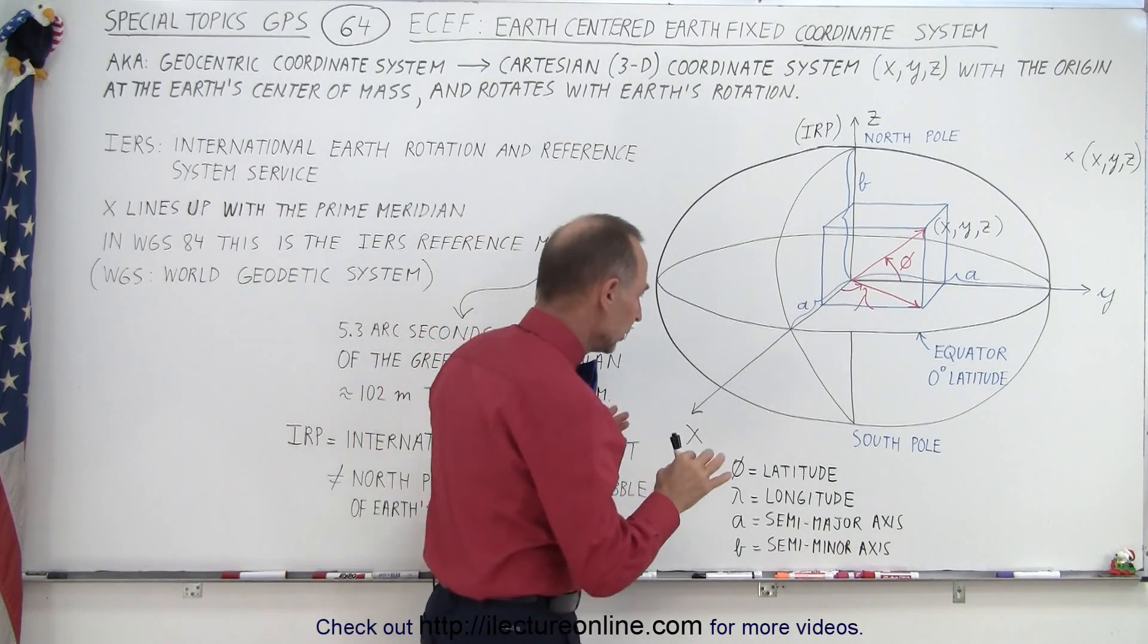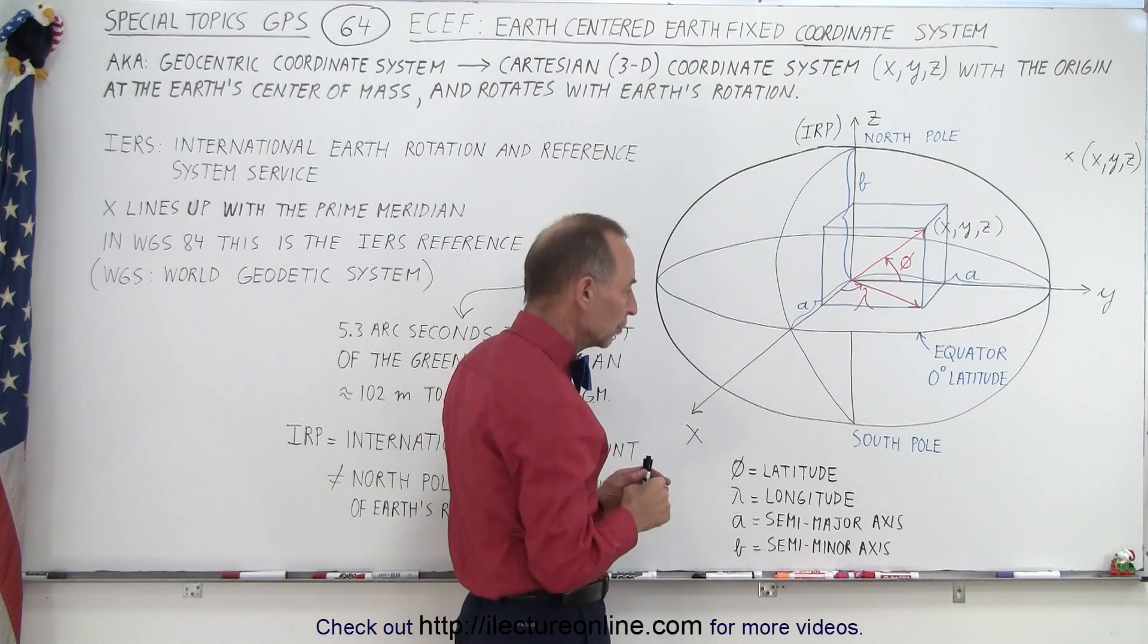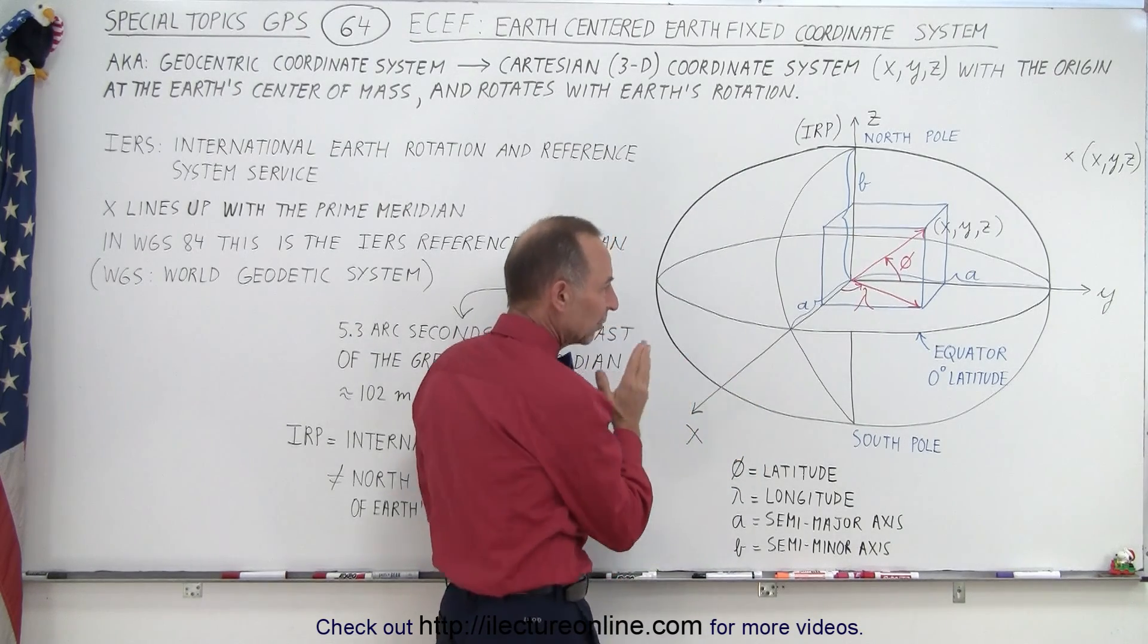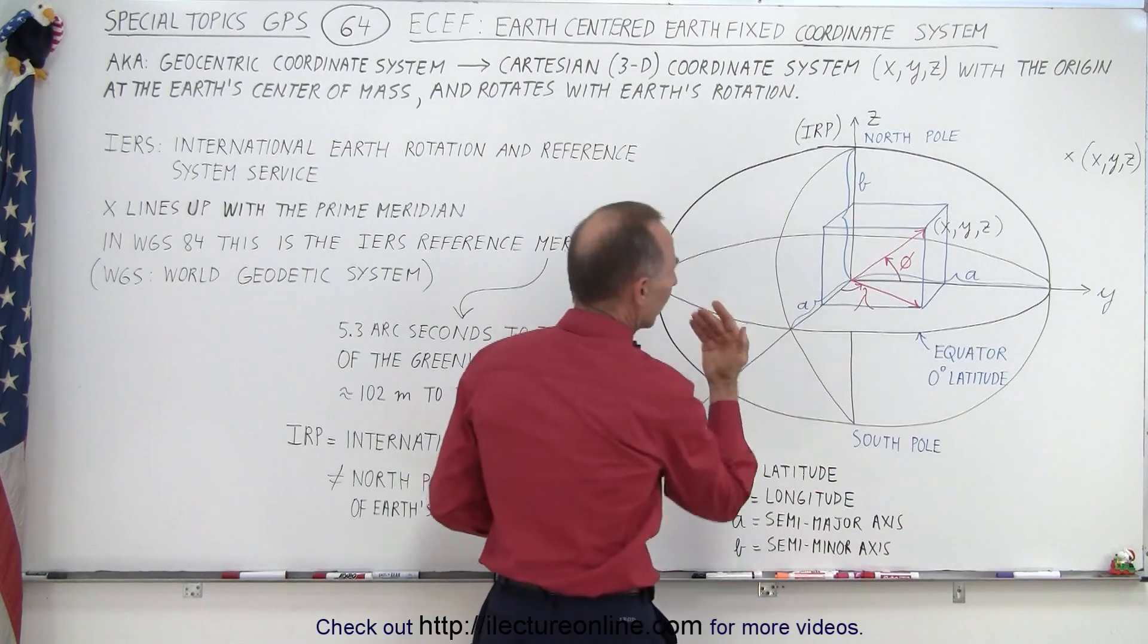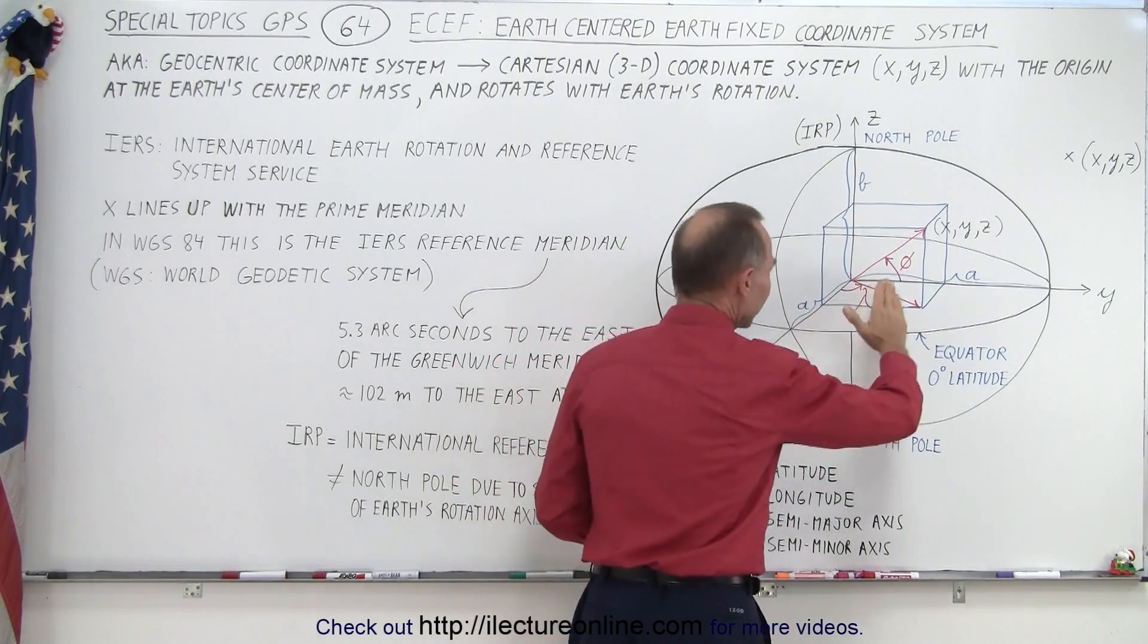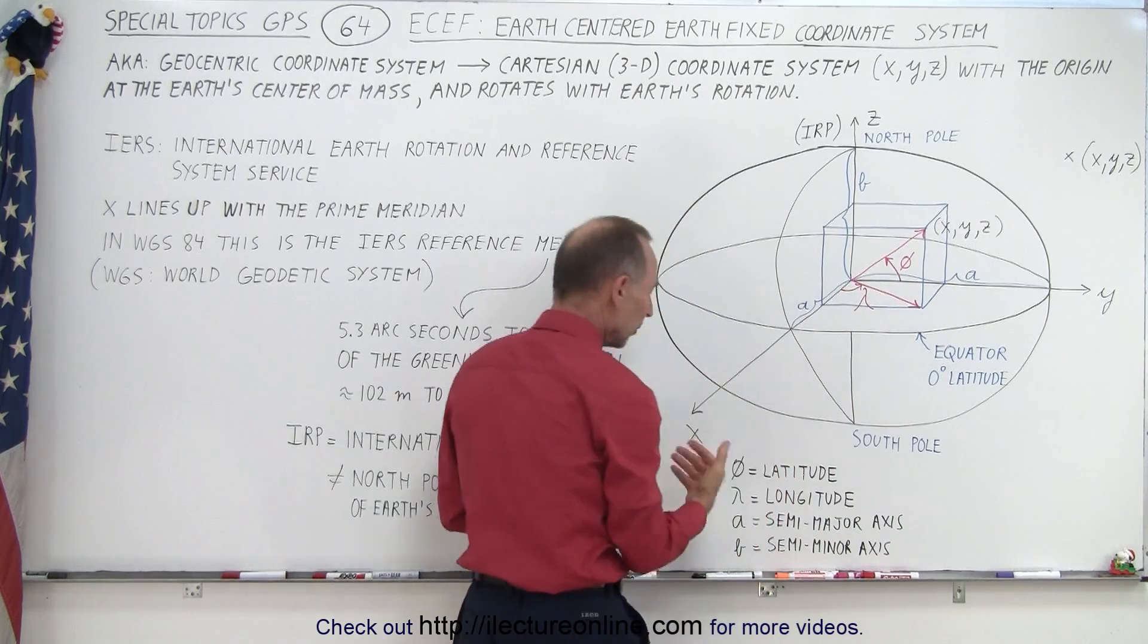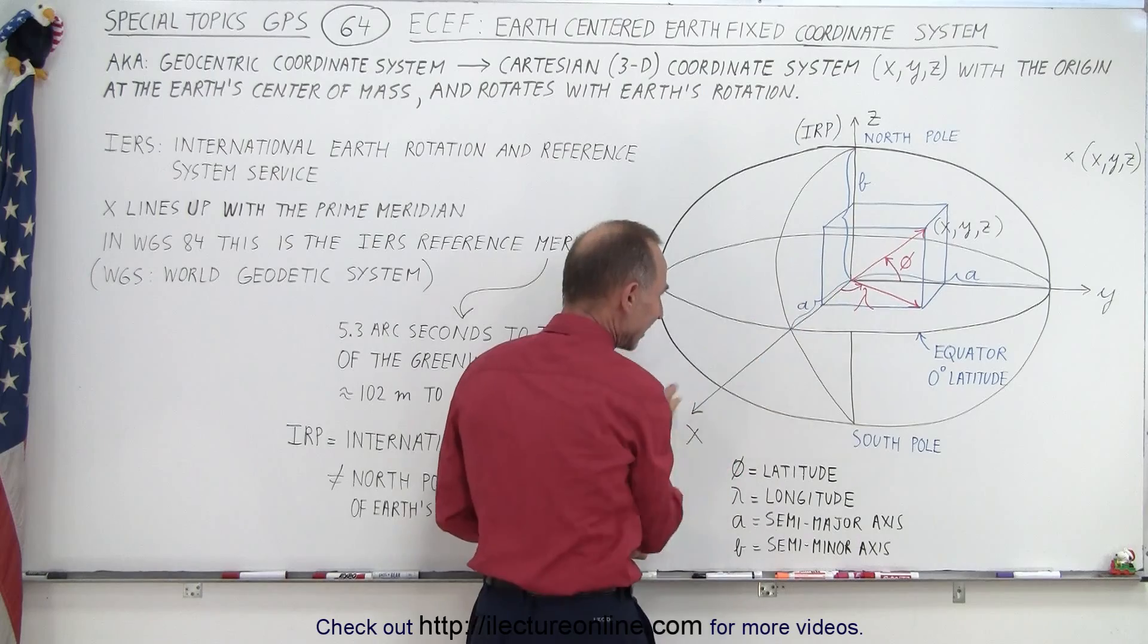Then we have to have a way of referencing latitude and longitude. So longitude is along the equator this way. When you draw a line along the X axis and then you reference that from the X axis, you can see that that angle represents a number of degrees away from the X axis.